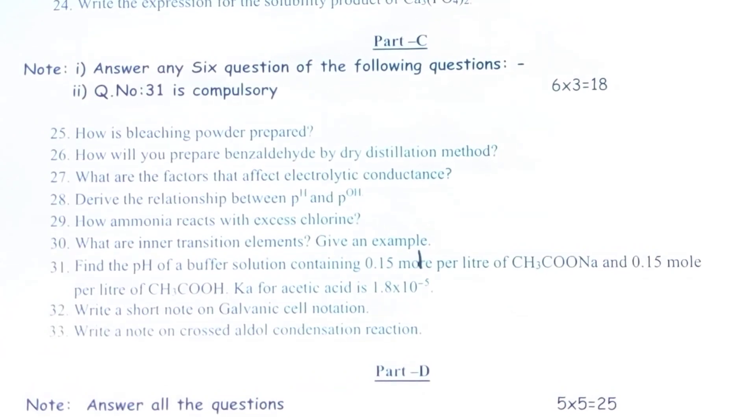31. Find the pH of a buffer solution containing 0.15 mol per litre of CH3COONa and 0.15 mol per litre of CH3COOH. Ka for acetic acid is 1.8 x 10^-5. 32. Write a short note on galvanic cell notation. 33. Write a note on crossed aldol condensation reaction.